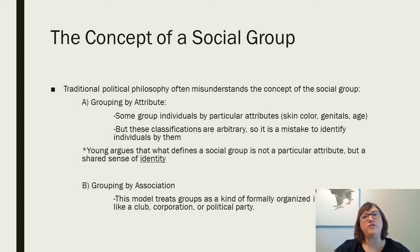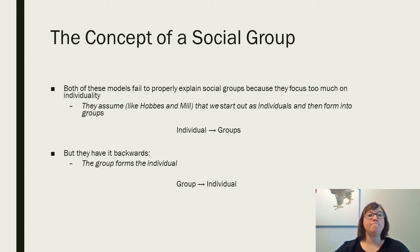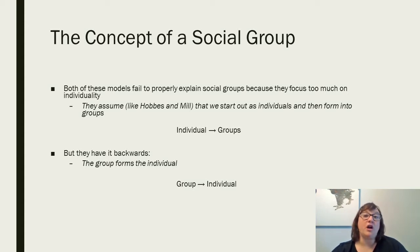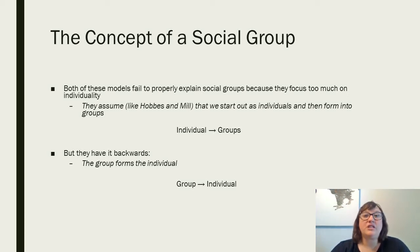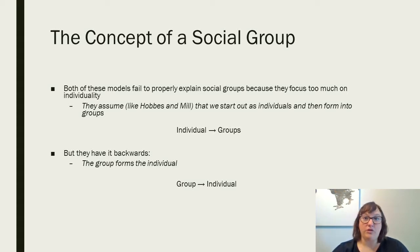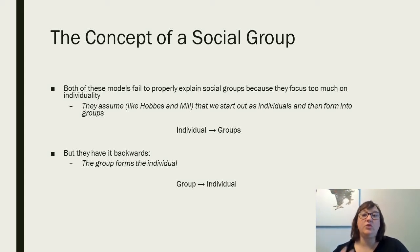Another model of understanding groups is grouping by association, which treats groups as a formalized, organized institution like a club, corporation, or political party. Both models fail to properly explain how social groups really work because they focus too much on individuality. Think back to Hobbes and Mill — they are really interested in individuality, starting with the idea of individuals who then form into groups. But what Young wants to say is that they have it backwards.